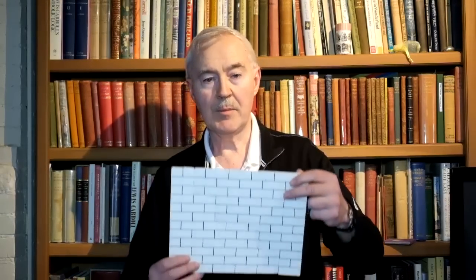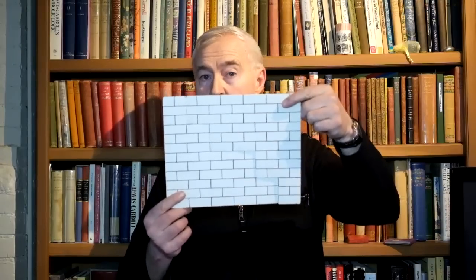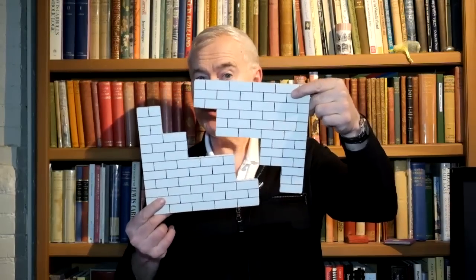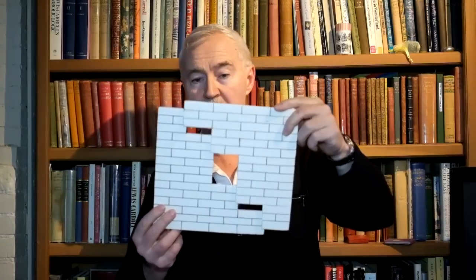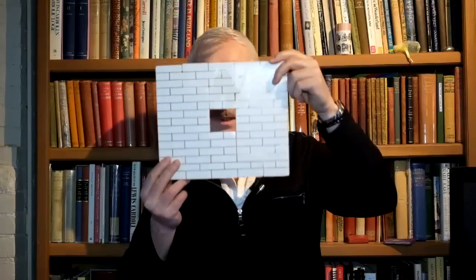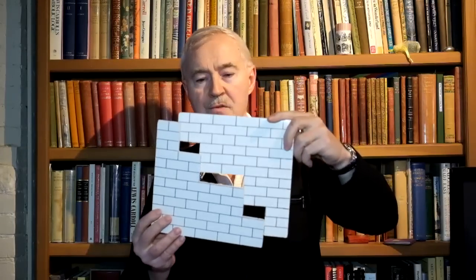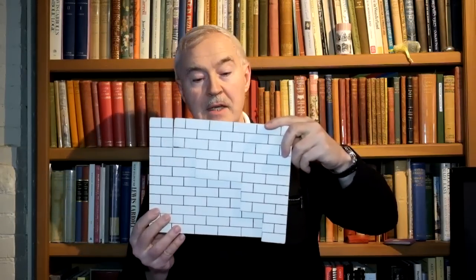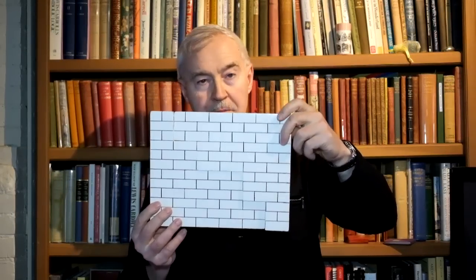Here's a great example that Robert Neill created — this is his brick wall illusion. Two pieces: take them apart, put them back together again, and suddenly the wall has a hole in it. Mysterious. But if you just put them back together again, the hole goes away.